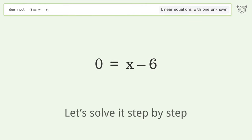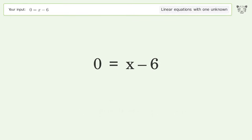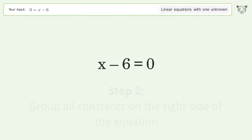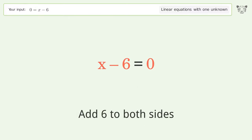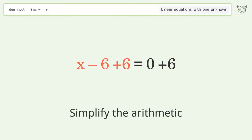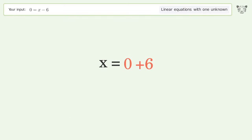Let's solve it step by step. Swap sides, group all constants on the right side of the equation, add 6 to both sides, and simplify the arithmetic. The final result is x equals 6.